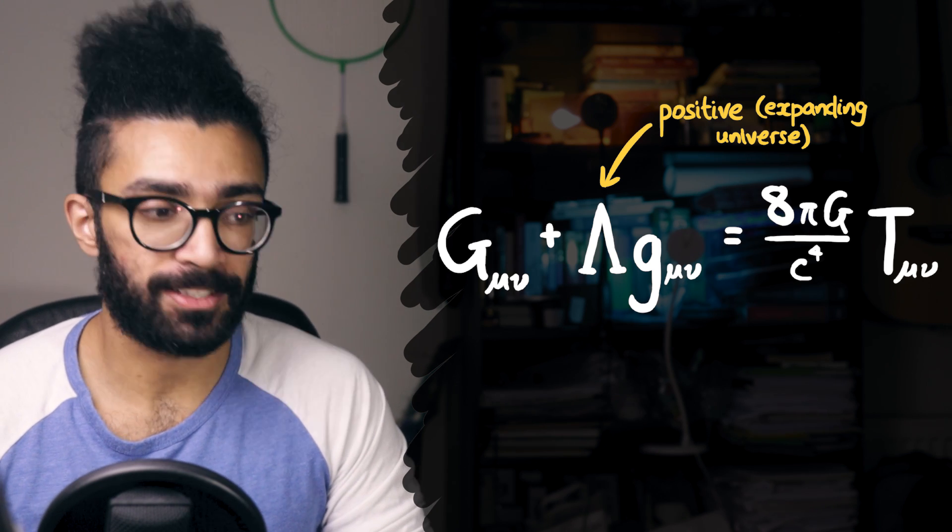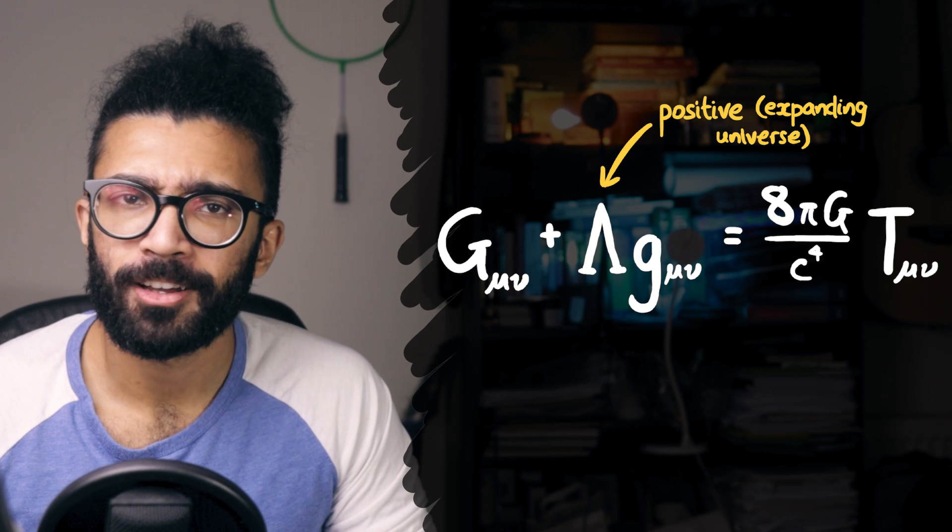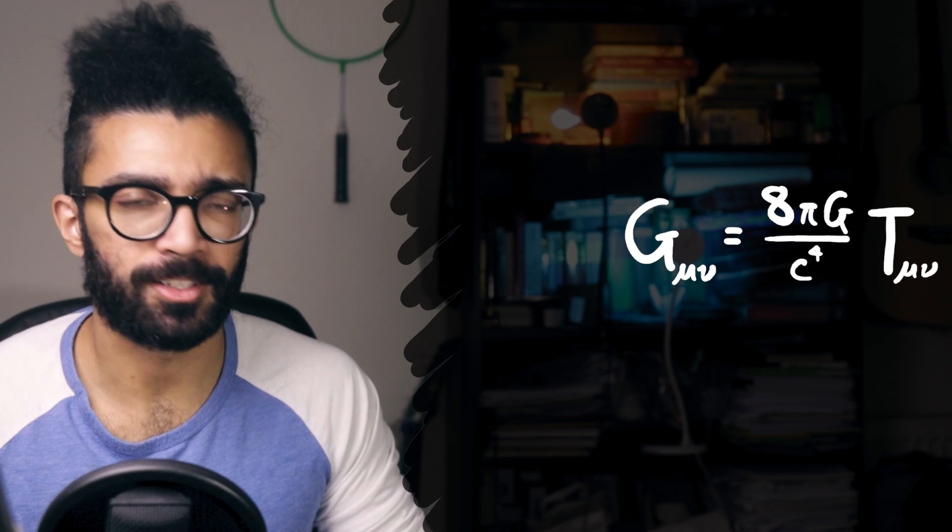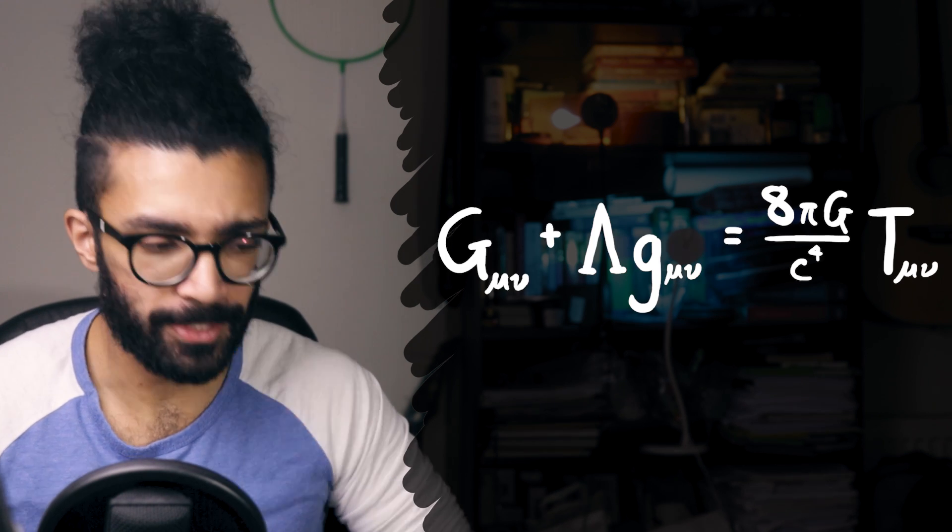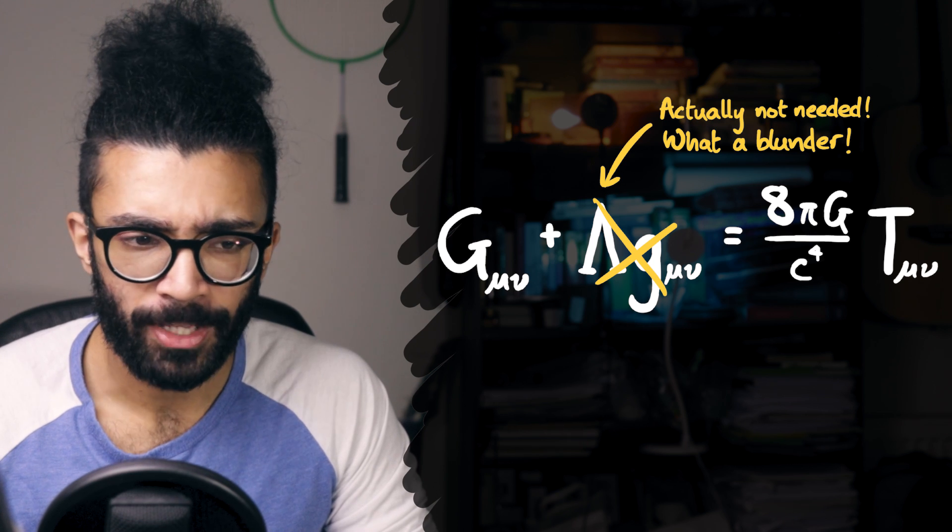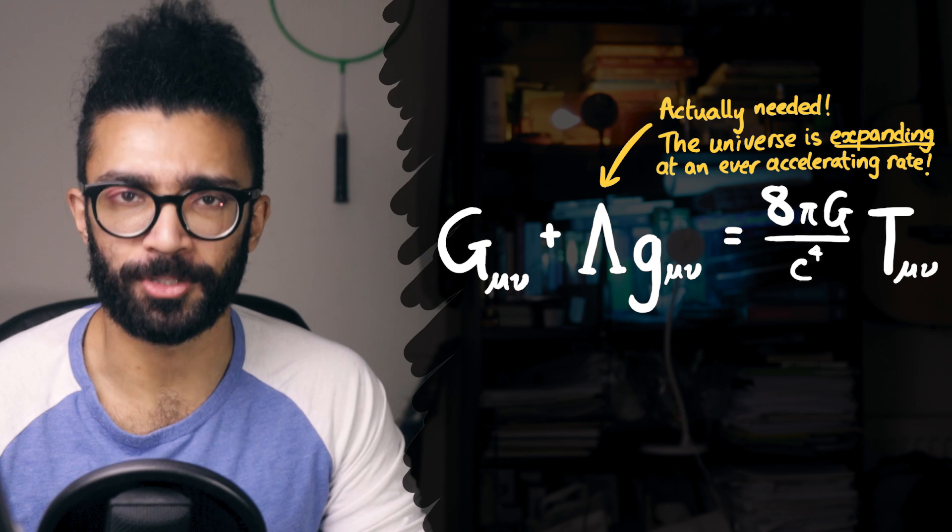So for this reason, we currently think the cosmological constant has a positive value, which suggests an expanding universe. This constant has a rather strange history. Initially, Einstein published his equations without the cosmological constant term, and then he chucked it in. Then he felt like it was his biggest blunder, and then realized that actually it does need to be there based on experimental observable evidence.